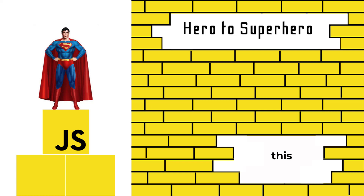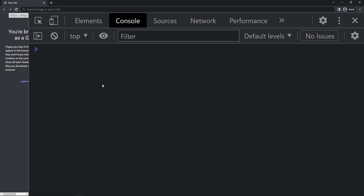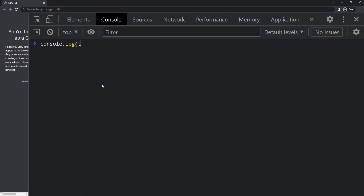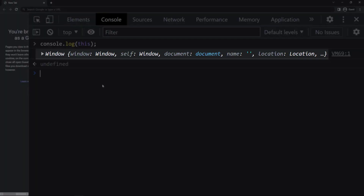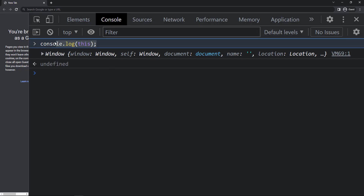In this video I'm going to talk about 'this' in JavaScript. This concept is one of the important but confusing concepts. In JavaScript, the 'this' keyword refers to an object depending on how it is used. Let me console log 'this' in a browser — we can see it is giving us the window object.